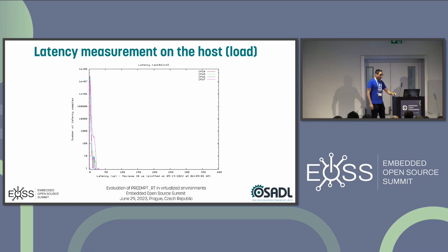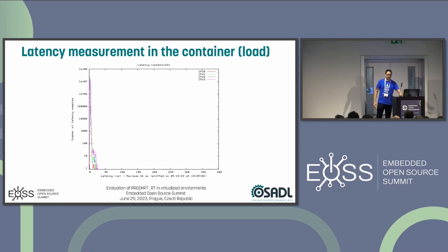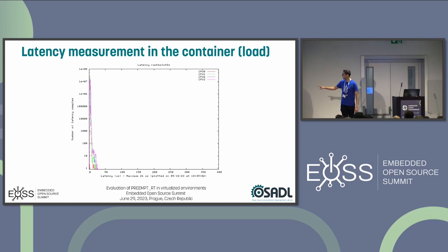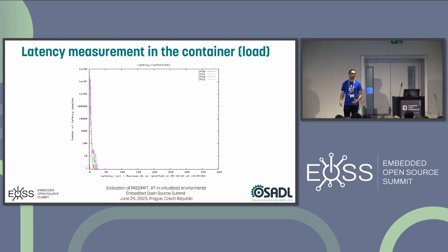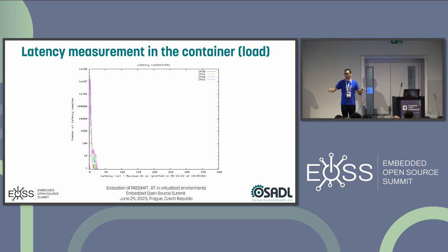Looking at the guest, it looks pretty much the same. We reached 26 microseconds worst case, which is in the same area as the host. The distribution of latencies also looks similar. This is not surprising — it's just a bunch of processes running in an isolated environment. There's no root cause for additional latencies, which is proved by these measurements. These measurements were running under heavy CPU load.